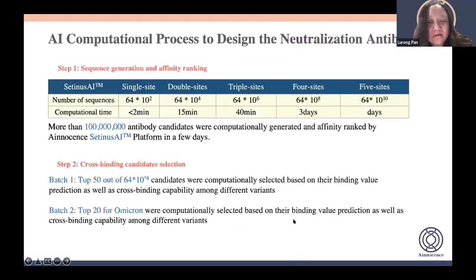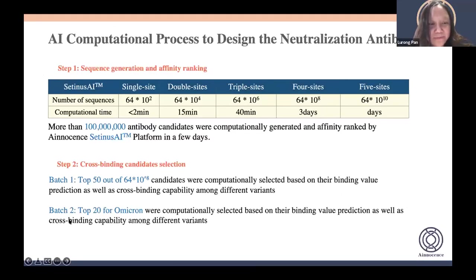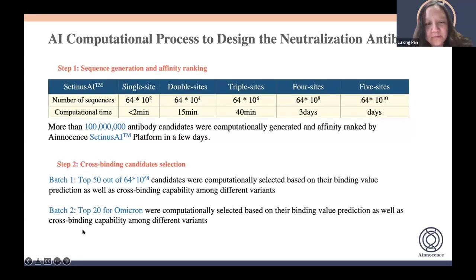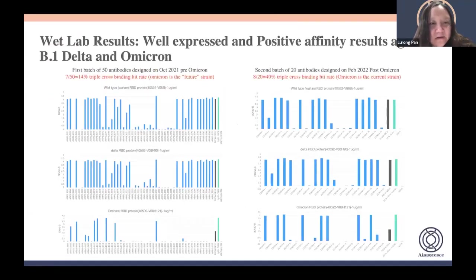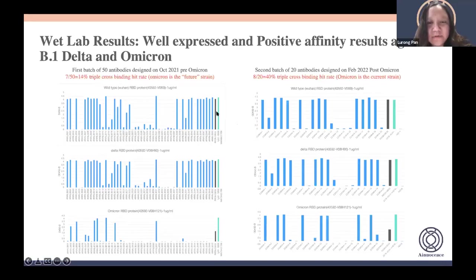What we actually did was compute 64 different antigen strains against triple or four-site mutagenesis in two batches: the first batch we took about 50 out of all possible binders, and the second batch for Omicron-included sequences we took 20 of them. Here is the ELISA result for a single dose, measuring OD450. We have three controls: the black ones are the therapeutic antibody approved by one company, the aqua one is a positive control, and the last one is a negative control.